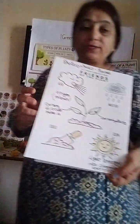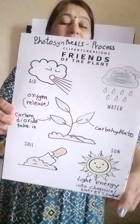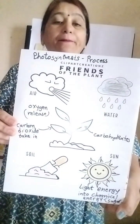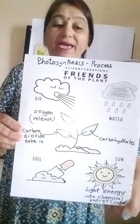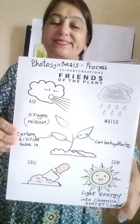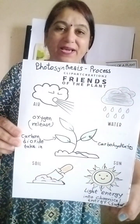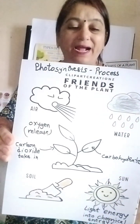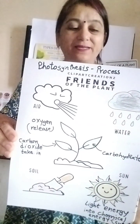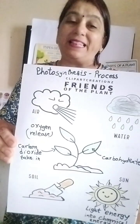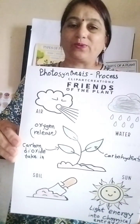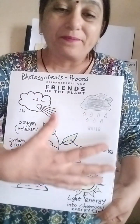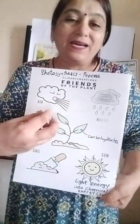This is photosynthesis. The process by which plants prepare their own food is called photosynthesis. What do we require for photosynthesis? We require a plant, sunlight - photo means light, and synthesis means to put together. So light and all the ingredients make the photosynthesis.